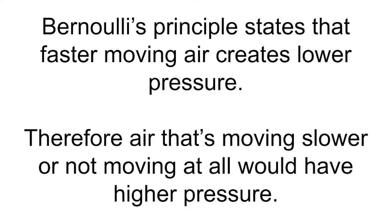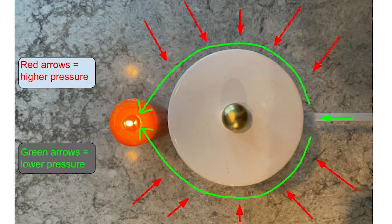Bernoulli's Principle states that faster moving air creates lower pressure. Therefore, air that's moving slower or not moving at all would have higher pressure. In this diagram from overhead, you can see the green arrow symbolizes the faster moving air — the air that was being blown. The air outside of that was not moving at all, and therefore had a higher pressure, which pushed in on the moving air, making it hug the cylinder, follow its contours, until it blew out the candle on the other side.